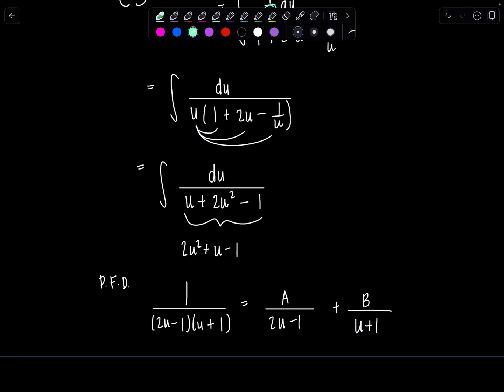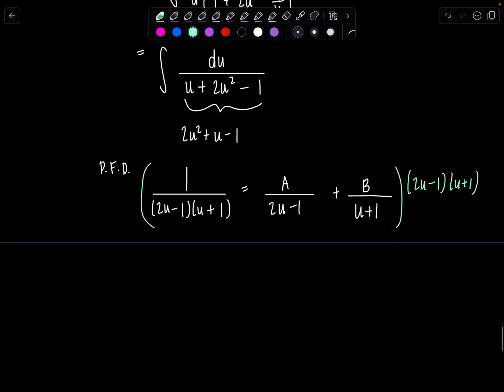Now let's go ahead, multiply through by the LCD, 2u minus 1, u plus 1. So we can solve for the constants a and b.